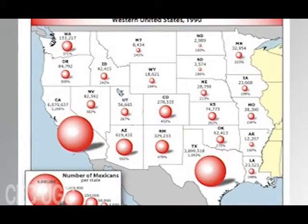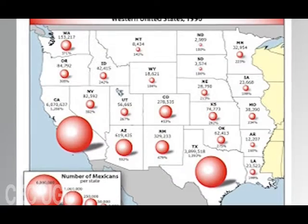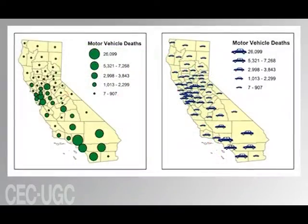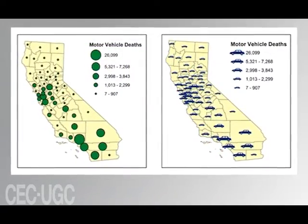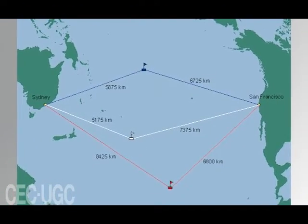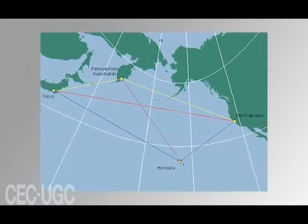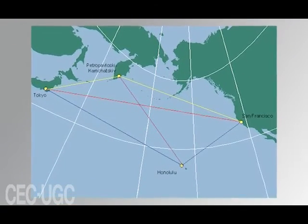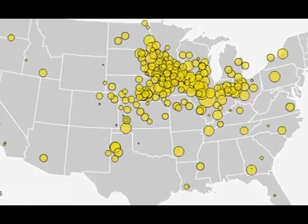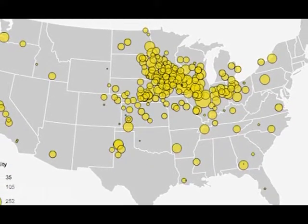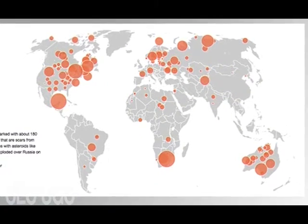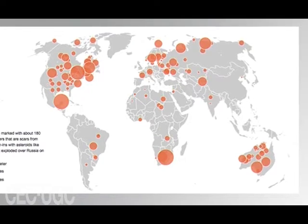A proportional symbol map is better than choropleth maps for showing raw data totals. A proportional symbol map uses symbols that are proportional to the data they represent with point locations. These symbols can be true points or conceptual points. True points represent real objects or the exact location of a tangible object, such as an oil well or fire hydrant. A conceptual point represents the center of the enumeration unit, such as a corn field. The raw data on proportional symbol maps goes hand in hand with the data shown on choropleth maps.